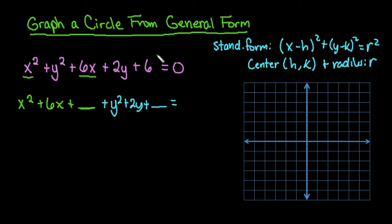And then our constant term we're going to take to the other side. So this would be -6. And then because I added two blanks to the left side, I'm going to add those same two blanks to the right side. Because whatever I do to the left, if I do the same thing to the right, then my equation stays balanced.